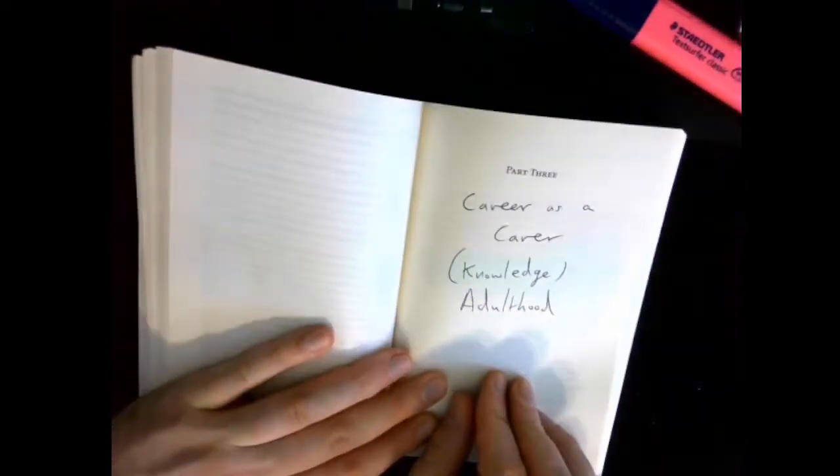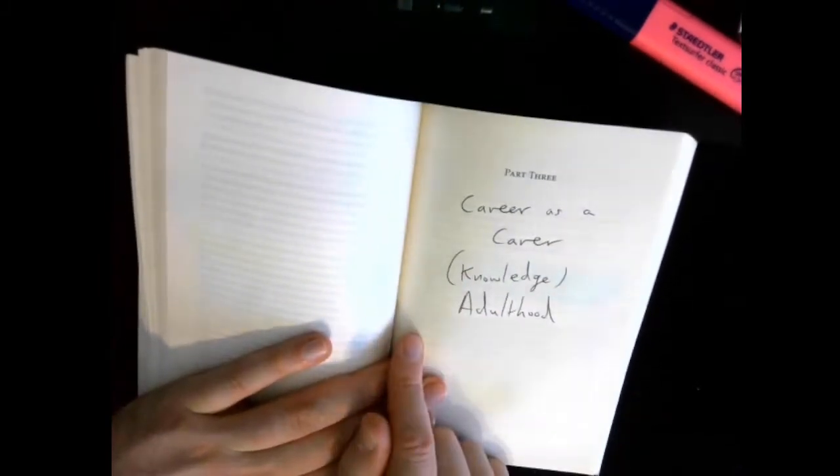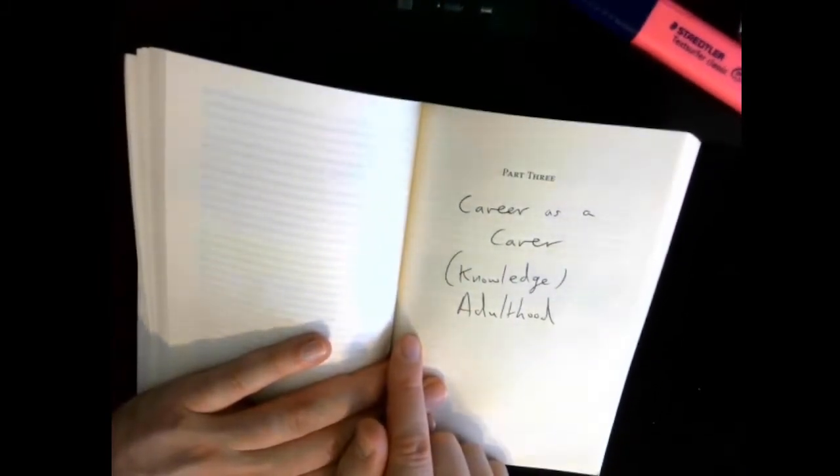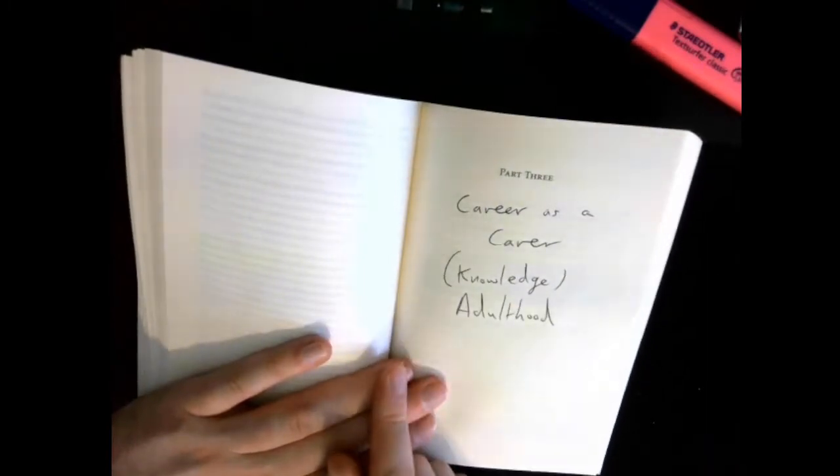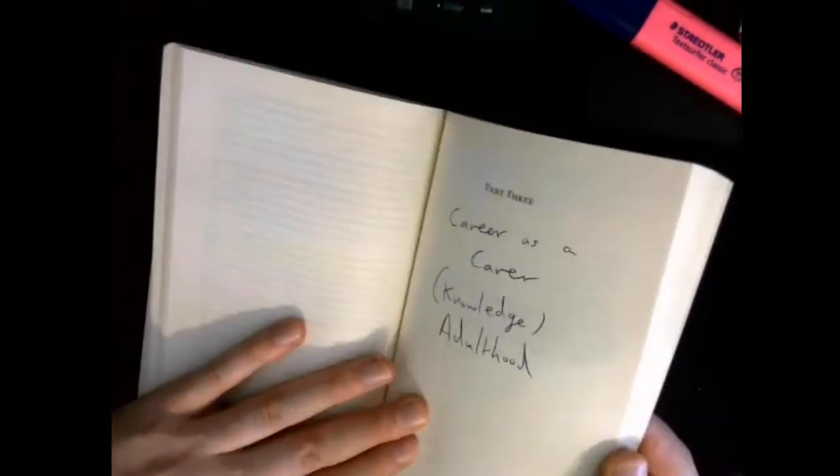You can see just from the flipping that chapter three, part three, sorry, is smaller. So this is Cathy's career as a carer, which is hard to say. And this is sort of allegorically her knowledge and her adulthood coming together.